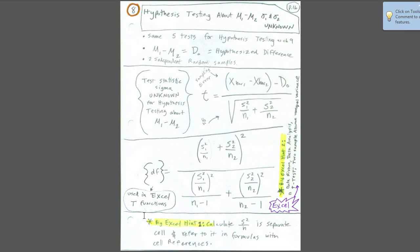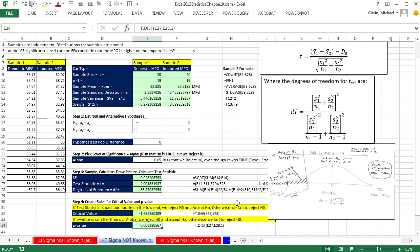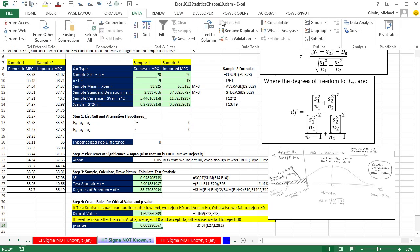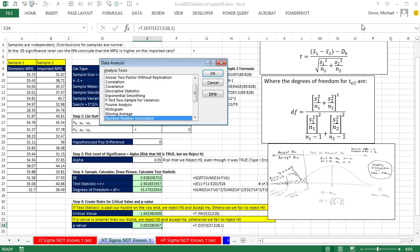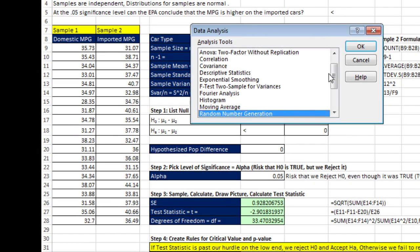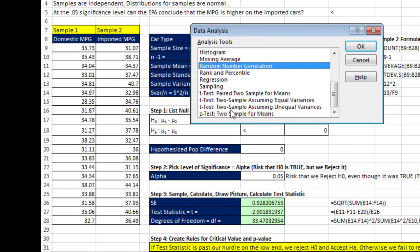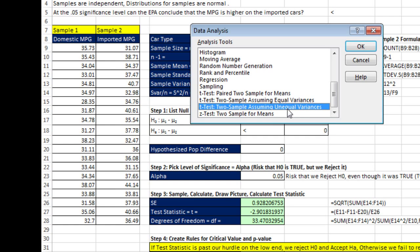Remember from our PDF, this degrees of freedom formula assumes that the standard deviations from the population are not equal. So there is an automatic feature. Notice sample one, sample two. We simply go up to data. Data analysis, and we've seen this many times in this class. Scroll down, and at the bottom, we saw a z-test for two sample means a couple of videos ago. But now we're going to do t-test two sample assuming unequal variances. We saw a formula in our PDFs that assumes equal variances. This is the one we're going to use unequal variance. And actually, we'll come back in our next video and talk about paired samples.